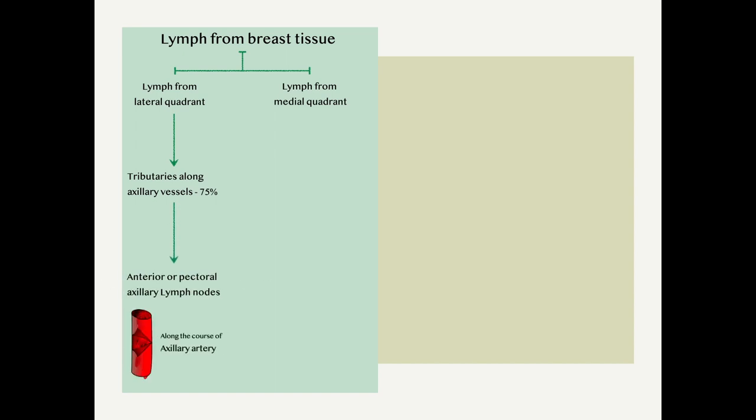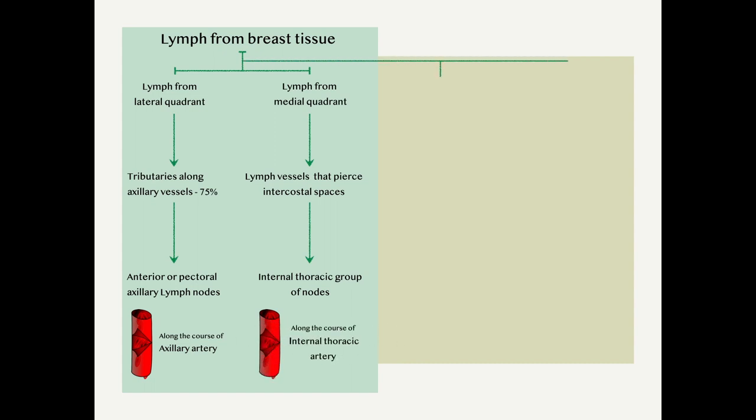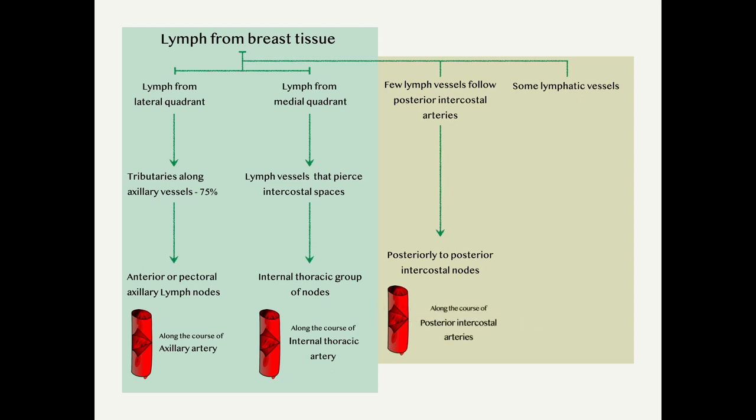Lymphatic drainage of the breast follows the pathway of the blood supply. Lymph from the lateral part of the breast drains from the tributaries along the axillary vessels to the axillary lymph nodes. This accounts for approximately 75 percent of the total lymphatic drainage of the breast. Lymph vessels that pierce the intercostal spaces drain the medial part of the breast to the internal thoracic group of nodes.